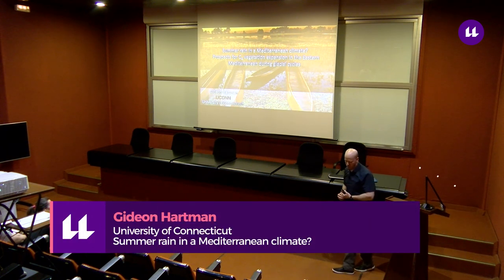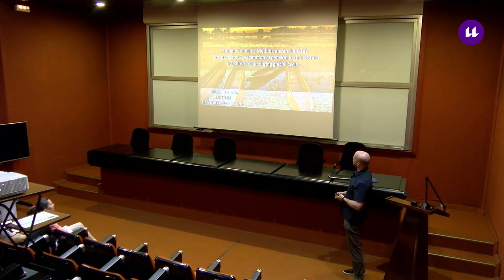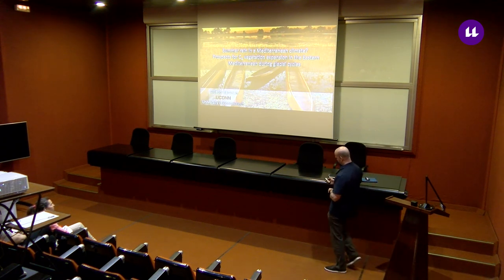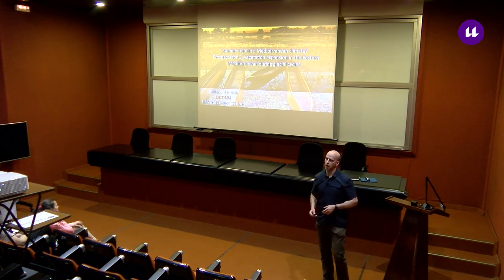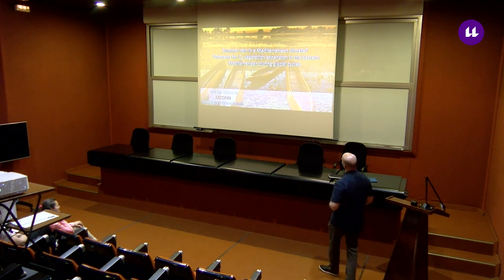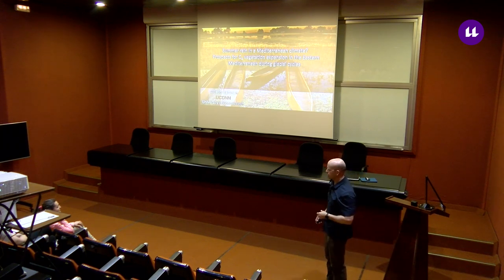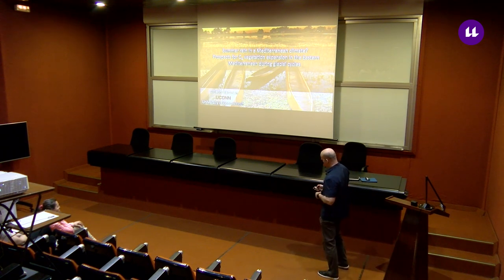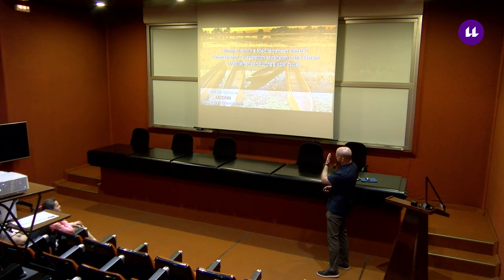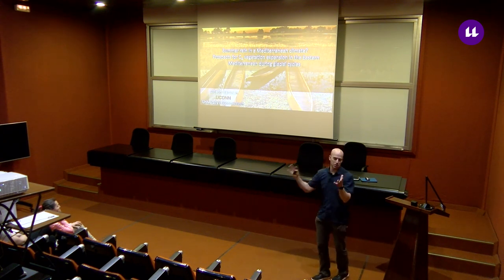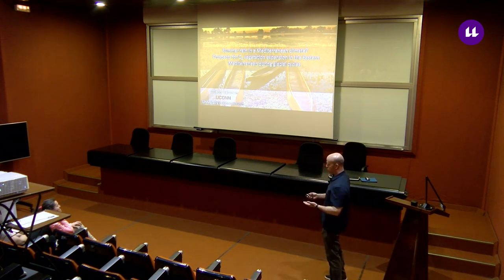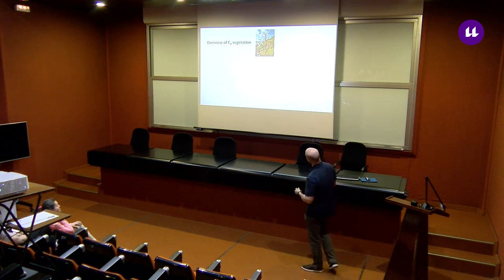I'm presenting on the potential of summer rain in a Mediterranean climate and the prospect for C4 vegetation expansion into the eastern Mediterranean during glacial cycles. The slide in the background is from the Okavango Delta in Botswana — a region that looks very lush and rich in fauna, not because of local conditions but because of water brought by rivers, creating the appearance of a very wet region.